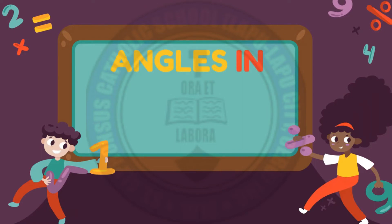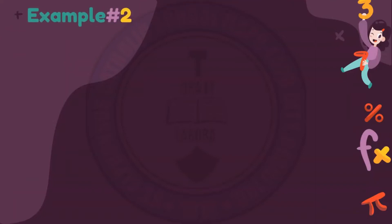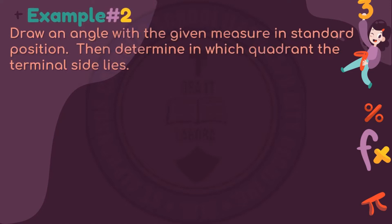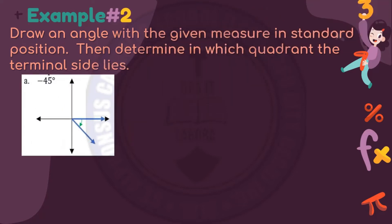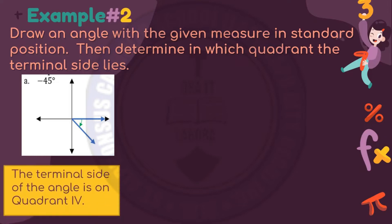Now let's have some examples — angles in standard positions. Example A: we have a negative 45 degrees angle. The initial side is on the positive side of the x-axis, and the terminal side is on quadrant 4. The angle rotates clockwise, since our angle is a negative angle.